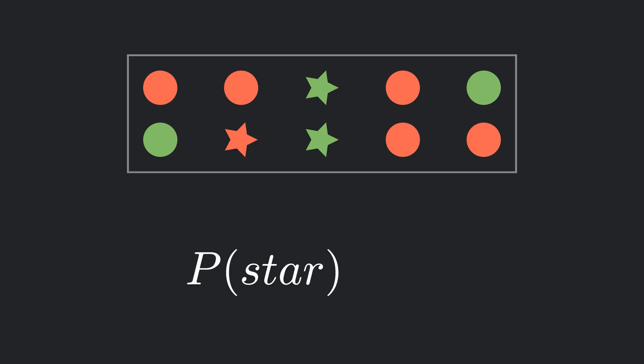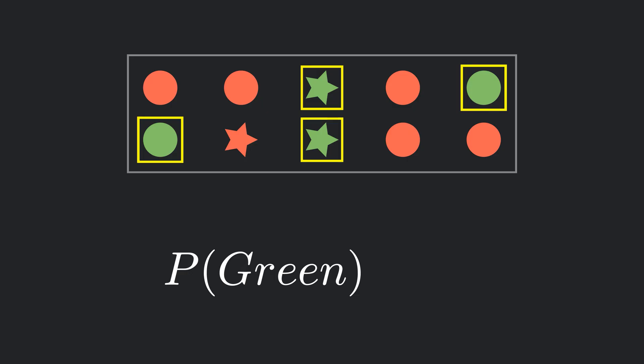Before we get our hands on the naive Bayes algorithm, let's first understand the foundation it's built on: Bayes theorem. Imagine a box filled with different shapes. Now if we randomly pick one shape, what's the probability that it's a star? There are three stars here out of ten total shapes, so the answer is simply 3 divided by 10. Similarly, if there are four green shapes in the box, then the probability of picking a green shape is 4 out of 10.